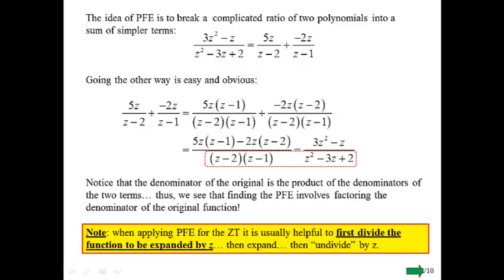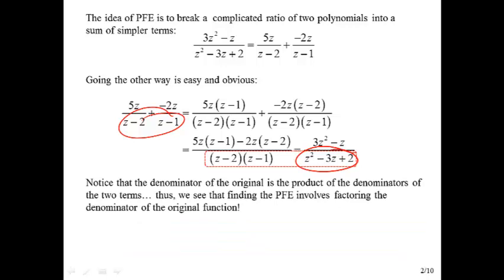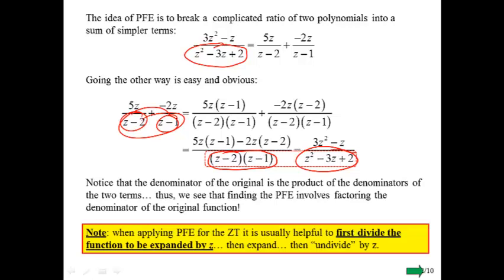Notice that the denominator of the original is the product of the denominators of the two terms. When doing partial fraction expansion, we need to look at this denominator and find out what its factors are. If we can factor it, then we know what these individual bottom terms are. As a trick, we're going to first divide by Z, then expand, and then undivide by Z. It's not part of the partial fraction expansion, just a trick so we end up with the kinds of things on our table.